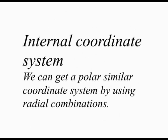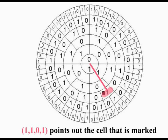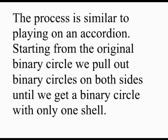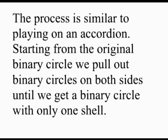Internal coordinate system: we can get a polar or similar coordinate system by using radial combinations. The combination 1, 1, 0, 1, 0, 1 points out the cell that is marked.